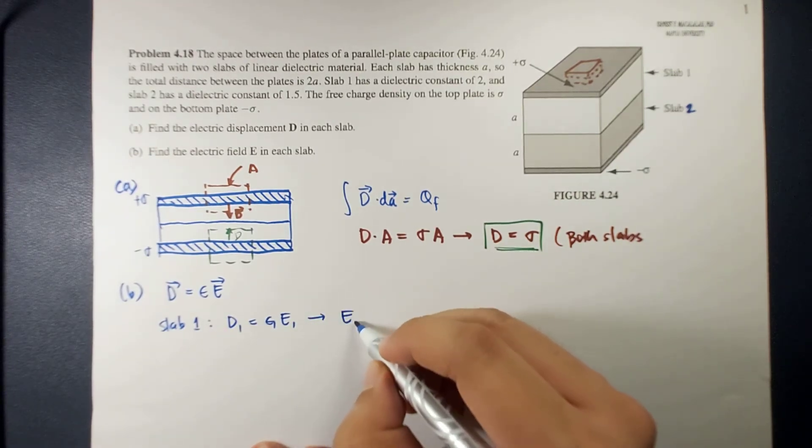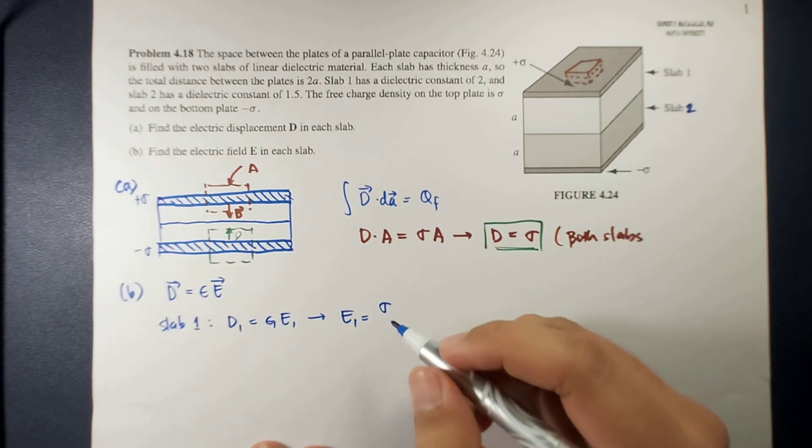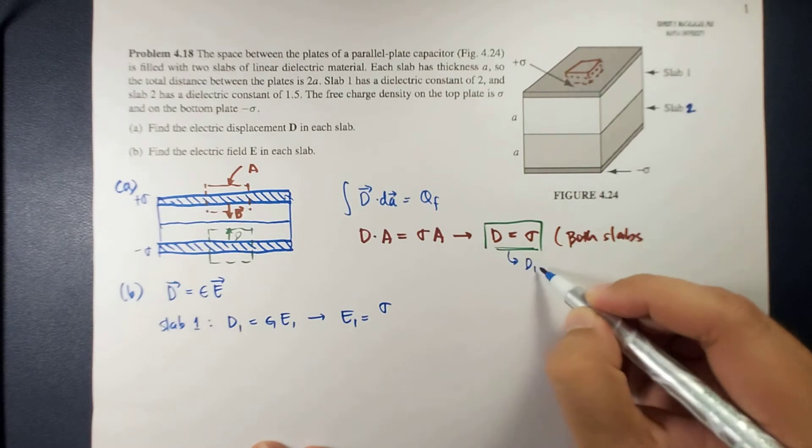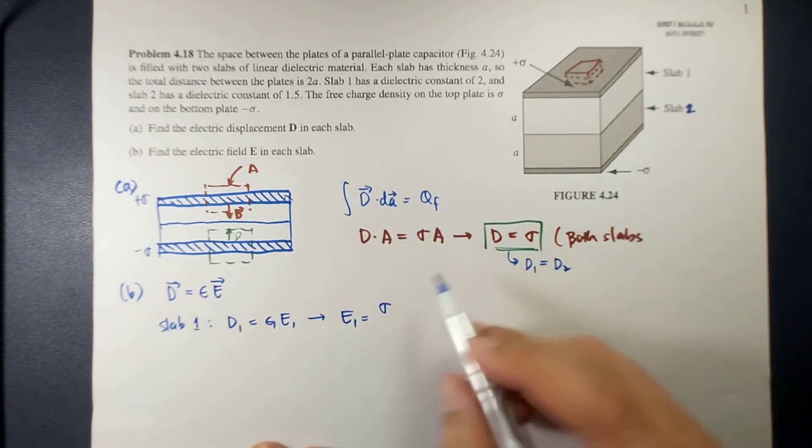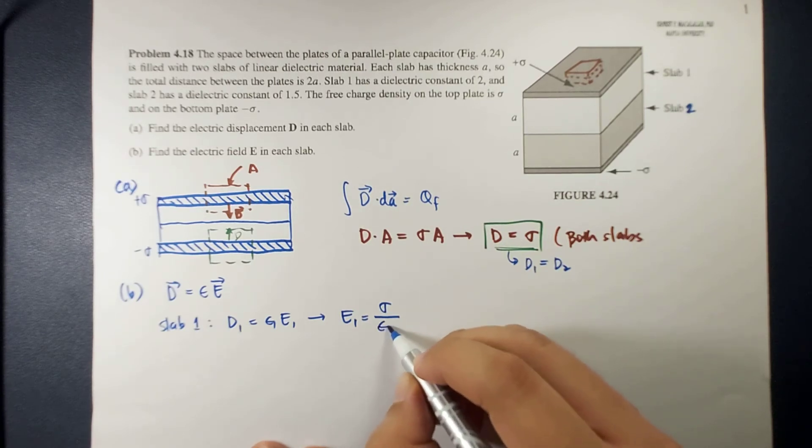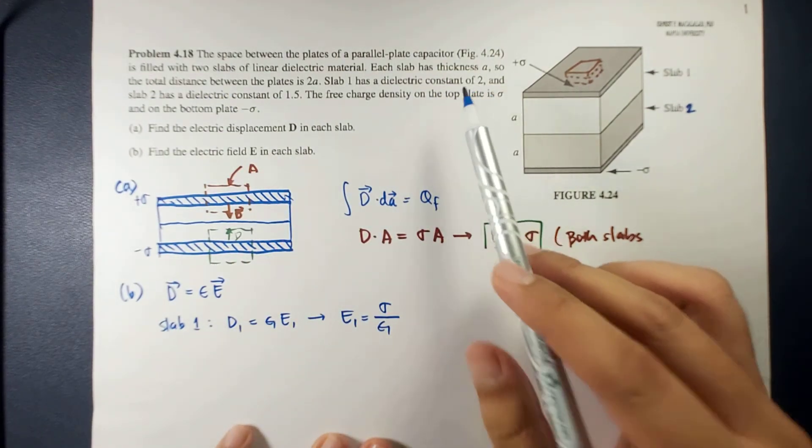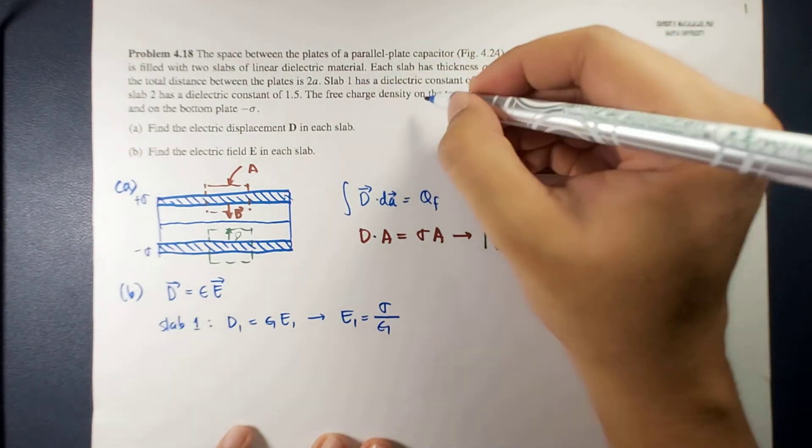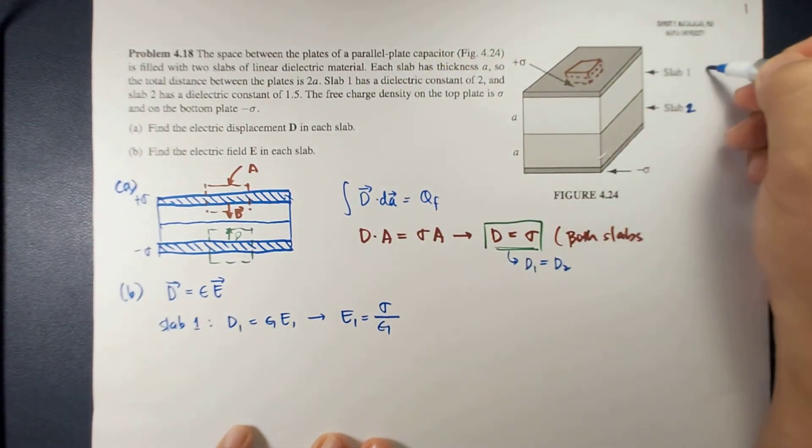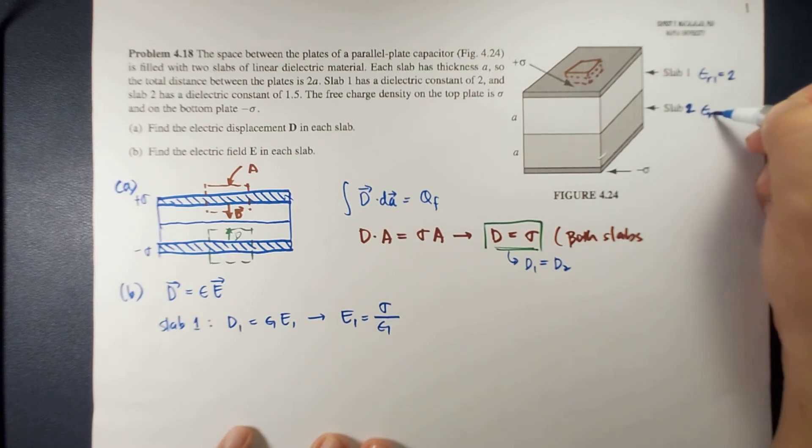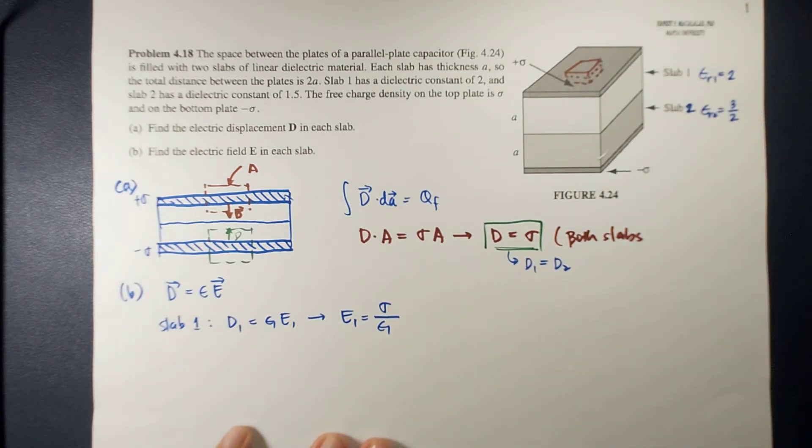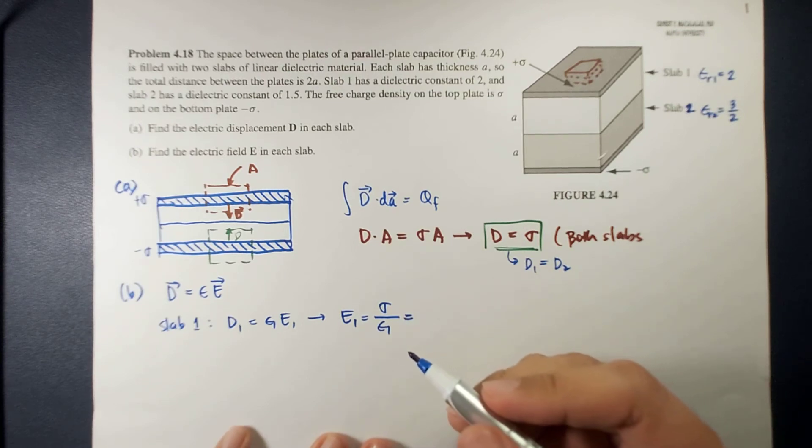And we're looking for the electric field. So this provides us that E1 would be sigma or D1. So this is D1 and D2. So D1 is sigma, so this is sigma divided by epsilon 1. Okay, so remember that the electric constant is 2 for slab 1.